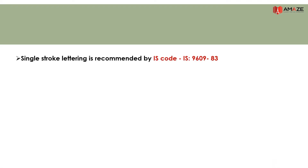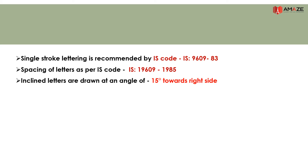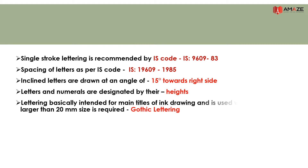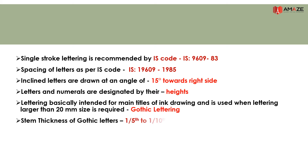The two IS code values for lettering: single stroke lettering is IS 9609-1983, and spacing of letters is IS 9609-1985. Inclined letters are drawn at an angle of 15 degrees towards the right side. Letters and numerals are designated by their height. Lettering type A is intended for main titles of ink drawings and is used when lettering larger than 20 mm size is required. The preferred style is gothic lettering, with a stem thickness of gothic letters being one-fifth to one-tenth of the letter height.